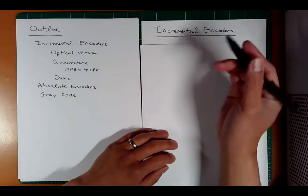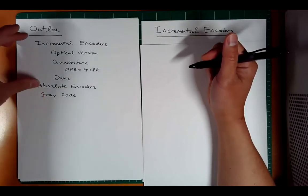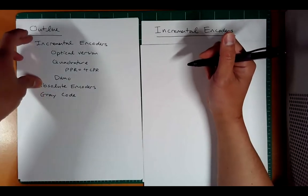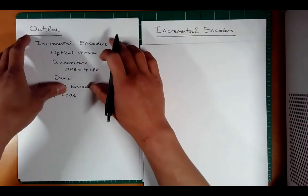Hi, this is ET370, Lecture 14. This is going to be a two-part lecture. The first part, we're going to talk about incremental encoders, and the second part, we'll talk about absolute.